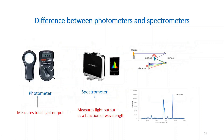A photometer measures total light output (e.g., in lumens) without distinguishing between wavelengths. A spectrometer, such as the Lighting Passport, not only measures light output but also resolves it at each wavelength using a diffraction grating that separates wavelengths onto a detector. This provides a full spectral understanding of the light source.